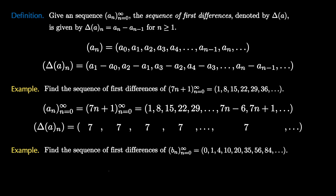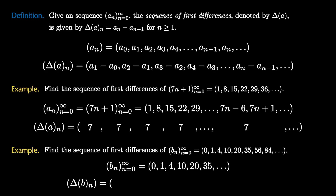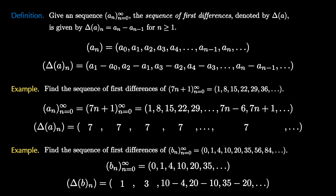Let's look at another example where the first differences are not constant — the sequence b_n given here. We compute first differences by subtracting successive terms: 1 minus 0, 4 minus 1, 10 minus 4, 20 minus 10, and 35 minus 20. Simplifying, this gives the sequence 1, 3, 6, 10, and 15. Have we seen this sequence before? Do you think we can use that to figure out the formula for b_n?